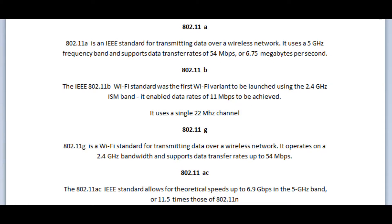And the correct answer is option B. 802.11B. The IEEE 802.11B Wi-Fi standard was the first Wi-Fi variant to be launched using the 2.4 GHz ISM band. It enabled data rates of 11 Mbps to be achieved. It uses a single 22 MHz channel.